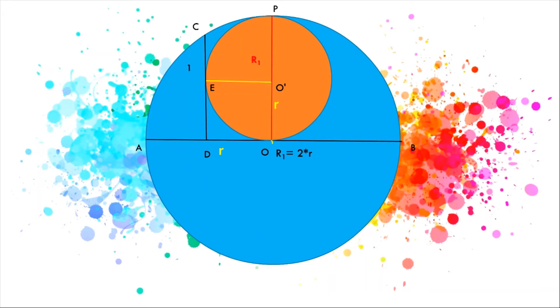First, we construct O to O' to B, which lies in a straight line. Then we construct O' to E. We can see that O'EDO is a square with side length r, where r is the radius of the orange circle.